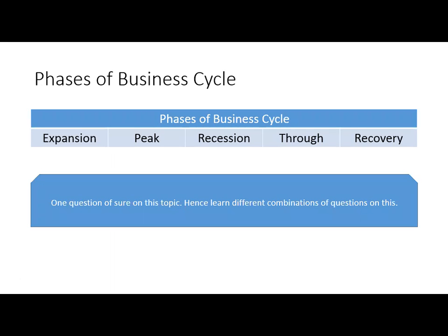So what is a business cycle? A business cycle is the ups and downs in the economy or in business. It's not a straight line but it goes up and down. The phases are: expansion, recession, trough, and recovery.